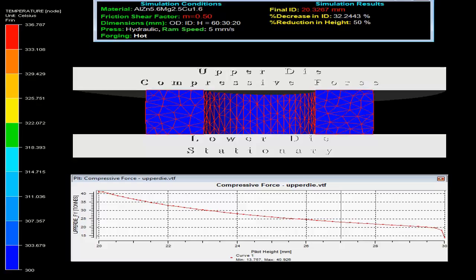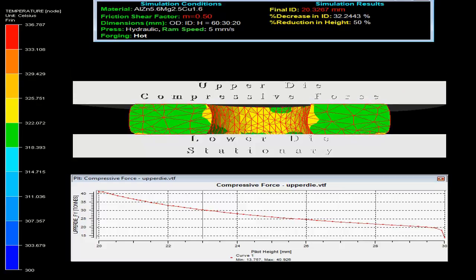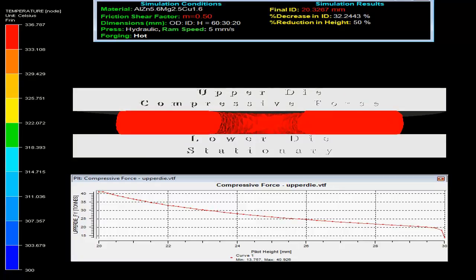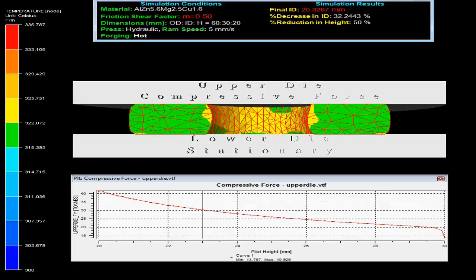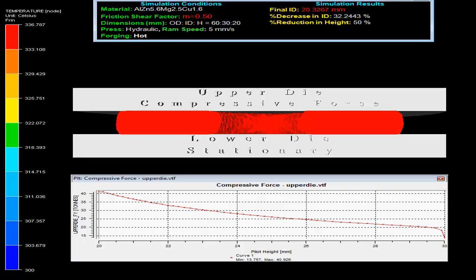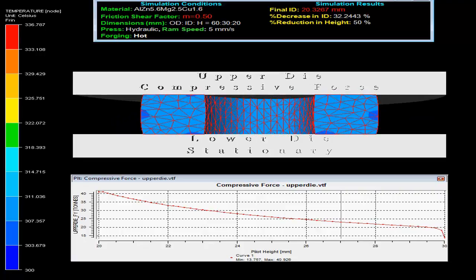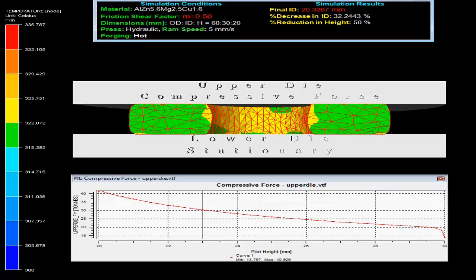On the top left corner in the video one can observe the simulation condition. The specimen material is aluminum alloy with friction shear factor M as 0.5 and initial outer diameter to inner diameter to height ratio as 60 to 30 to 20.